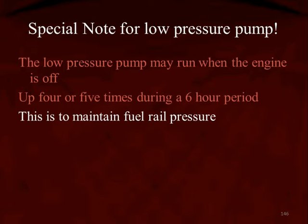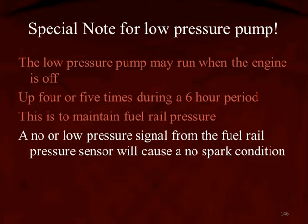Remember that the fuel control solenoid, when it doesn't have any power, is wide open, so fuel runs directly through the high pressure pump to the common rail. A no or low pressure signal from the fuel rail pressure sensor can cause a no-spark condition. The computer recognizes low or no fuel pressure from the fuel rail pressure sensor — this could be that the rail is actually low on pressure, or it could be from a faulty sensor. The computer will then not attempt to fire the coil-on-plug units. Diagnostically, during a crank-but-no-start, you must check the fuel rail pressure sensor for input.